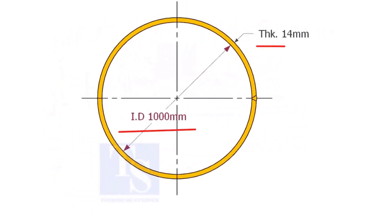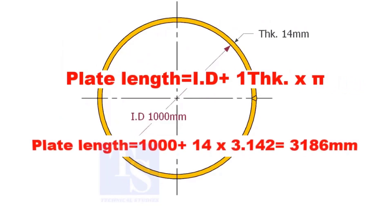Assume that the ID of the pipe is 1000 mm and the thickness is 14 mm. Then add one thickness to the ID, and then multiply with pi.